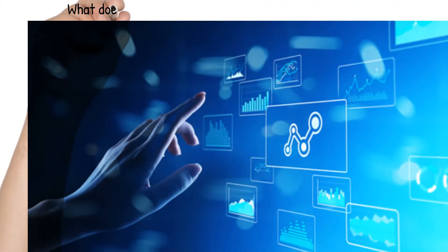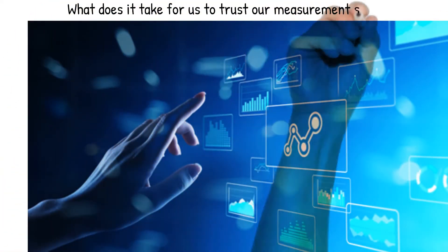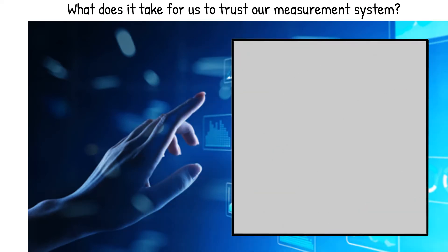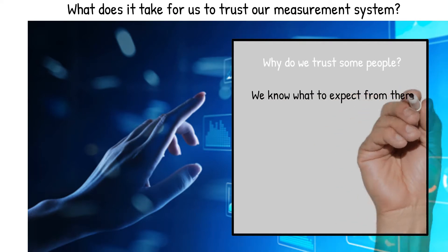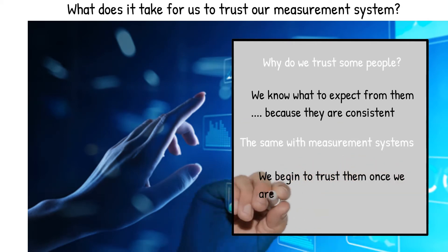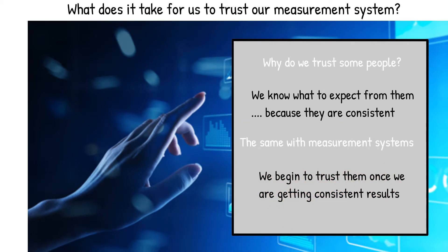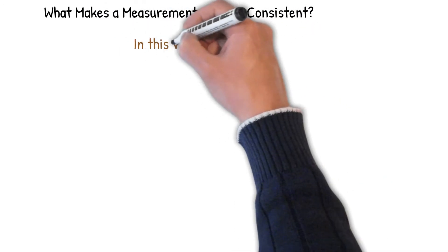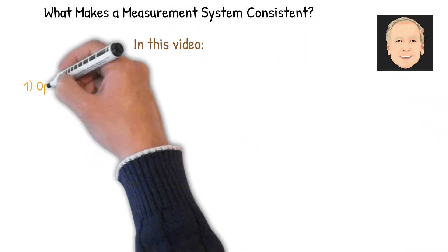So what really makes a good measurement system? What does it take for you to trust your own measurement system? Well, why do you trust some people? We know what to expect from them because they're consistent — that's why we trust them. And the same is true with our measurement systems. We begin to trust them once we are getting consistent results. So what makes a measurement system consistent? We're going to look at that in this video.